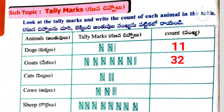Next animals are cats. Total cats are 5 plus 4, equal to 9. Next animals are cows. Total cows are 5 plus 5 plus 3, equal to 13. Next animals are sheep. Total sheep are 5 plus 5 plus 5 plus 5 plus 5 plus 5 plus 5 plus 5 plus 5, total 40.